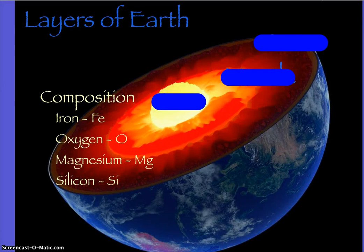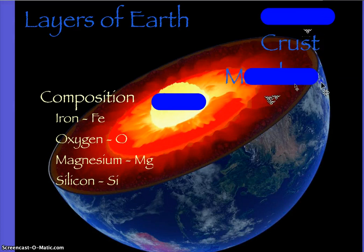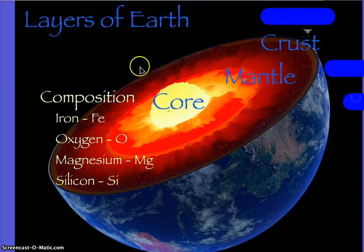What are the three parts? You should be able to just tell me. Crust, the outermost part; mantle, the middle; and core, okay? And for composition, you want to know iron, oxygen, magnesium, and silicon. You just want to know that they make up the geosphere.